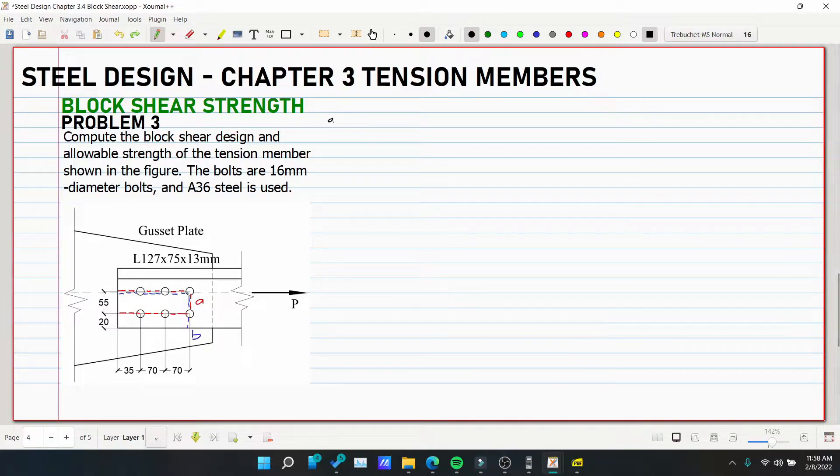So at A, A and B is equivalent to 70, 70 and 35, so 175. Minus the holes? Okay, two and a half again. So 2.5 multiplied by 16mm, so our effective hole diameter is 20mm diameter. Then multiplied by the thickness of our angle bar which is 13.